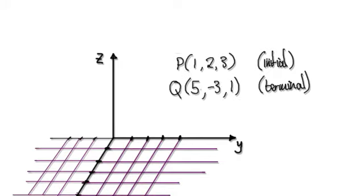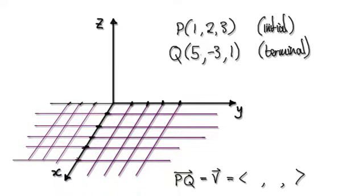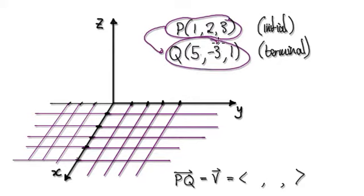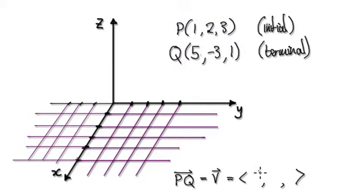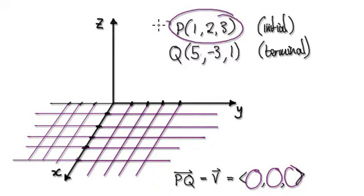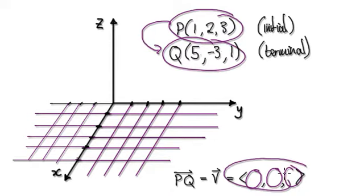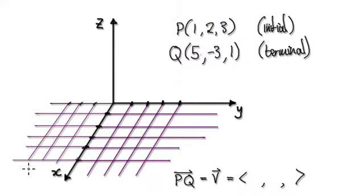Let's give you guys some practice now. Find the components of the vector that would take me from this initial point to this terminal point. Also find the magnitude of this vector. Press pause and have a go.